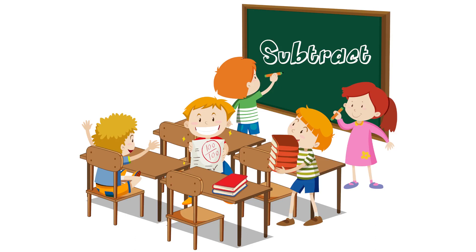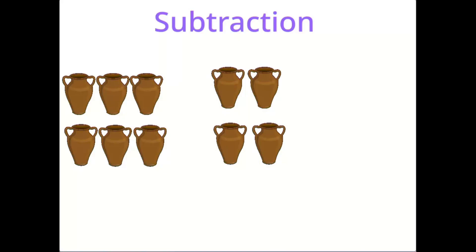Hi kids, let's do some exercises from Chapter 4, Subtraction. Let us count the number of pots for the first one: one, two, three, four, five, six. Now let us count the number of pots for the second one: one, two, three, four. Now subtract six minus four. Six minus four is equal to two.